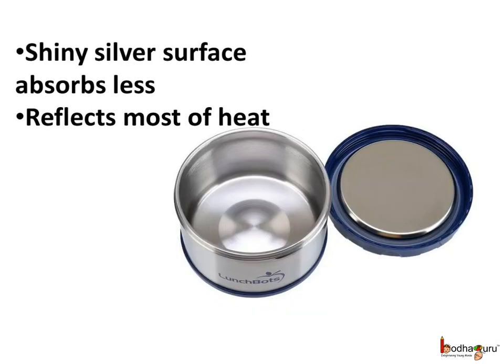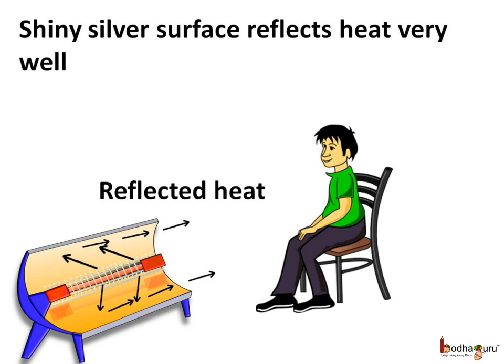On the other hand, the inside of a thermal pot is silver and shiny. This shiny surface absorbs very little heat and reflects most of the heat, so hot things remain hot for a longer time in such boxes. Similarly, room heaters have a shiny silver surface behind the heating coil. The shiny silver surface reflects heat very well, helping to focus heat from the coil toward the front of the heater.